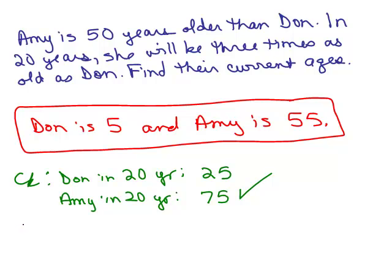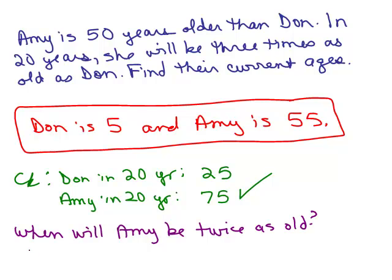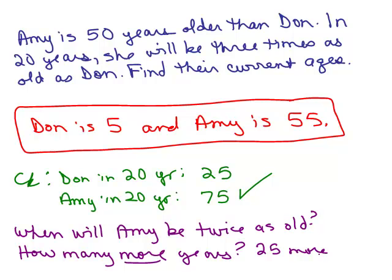Interesting observation here. When will Amy be twice as old? How many more years from here? So if Don is 25 and she's 75, can you do this in your head without algebra? Can you figure it out? In 25 more years, he'll be 50 and she'll be 100. Does that make sense? Then he'll be 50 and Amy would be 100.